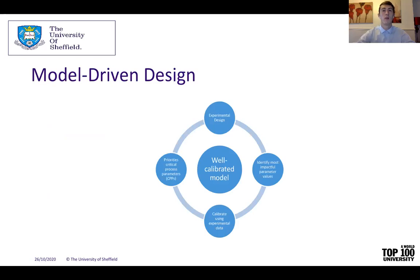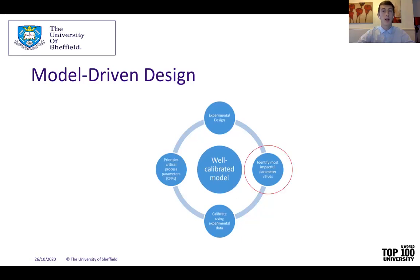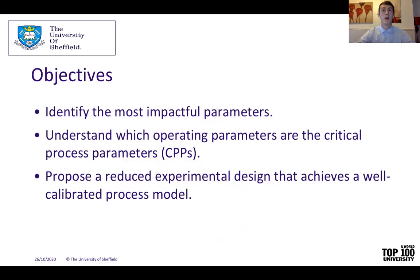Model-driven design requires a well-calibrated model, which is commonly approached through factorial design of experiments. However, an implication is that the effort increases by two to the power of the number of parameters. Therefore, in this work we aim to achieve a well-calibrated model through a cycle that shall reduce the experimental effort significantly. We first identify the most impactful parameters, then calibrate these parameters using experimental data through a specific experimental design that prioritizes the effect from the critical process parameters, often which I call CPPs.